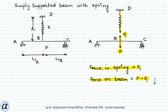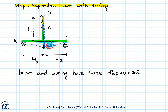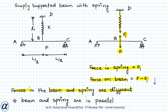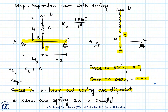The forces in the beam and spring are different, while their displacements are the same, which means the beam and spring are in parallel. The stiffness of the simply supported beam acted on by force F at mid-span is kb equals 48EI over L³. Because the spring and simply supported beam are in parallel, their equivalent stiffness is kb plus k.